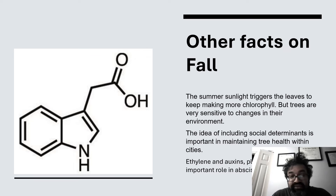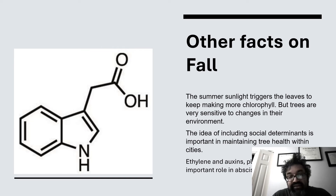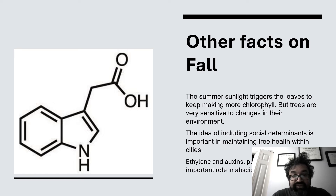Summer sunlight triggers the leaves to keep making more chlorophyll. But trees are very sensitive to changes in their environment, and as a result there are changes in the leaves. Of course, social determinants are associated with tree cover — where you have more or less tree canopy — and that shields from heat and some other important elements. Ethylene and auxins are the main compounds that play a role in tree abscission.